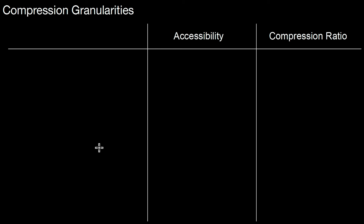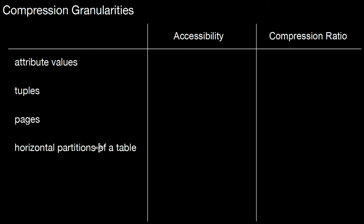It's important to understand compression granularities — that is, what is the object we are actually compressing or decompressing. We might compress individual attribute values, but we could also compress larger granules like entire tuples or pages. We could also compress an entire horizontal partition of a table containing many pages, or even entire tables or entire databases. The granule gets bigger as we go up in scope.